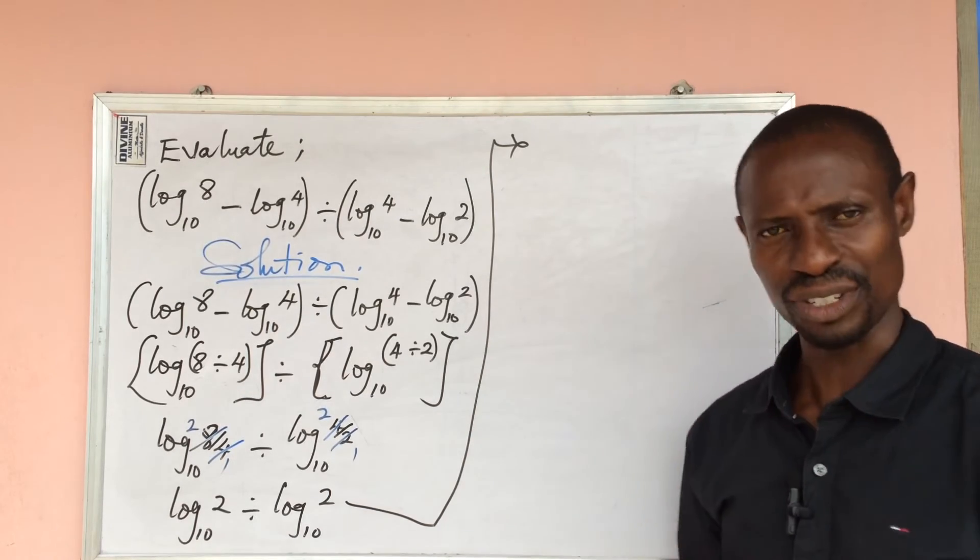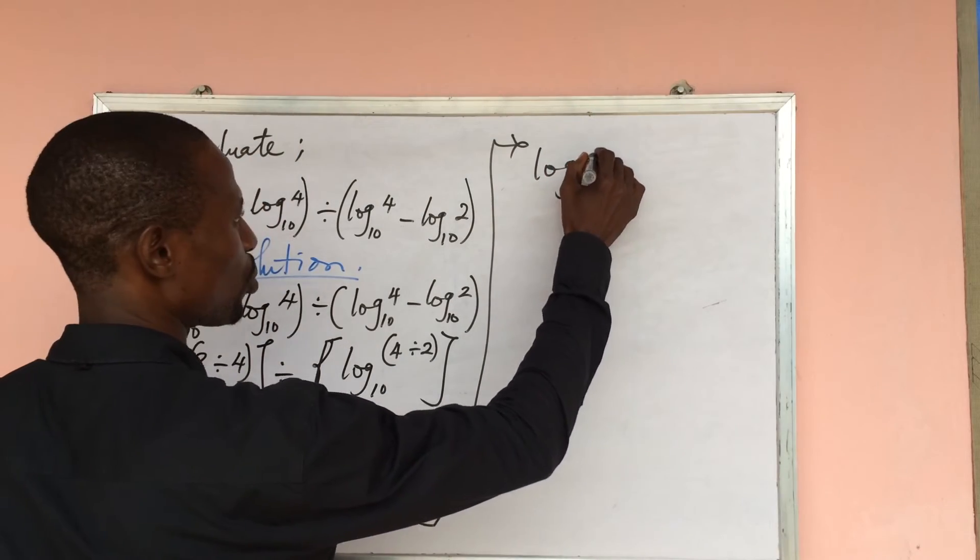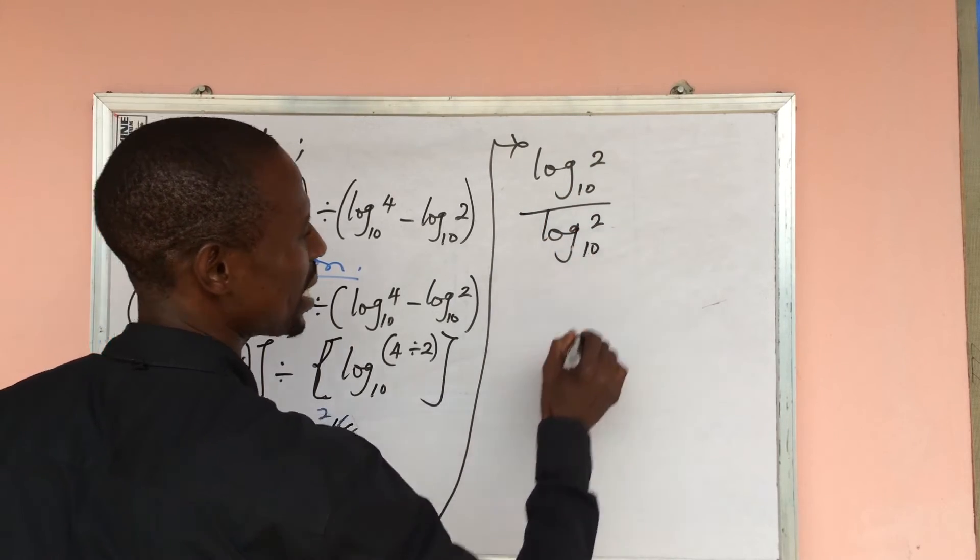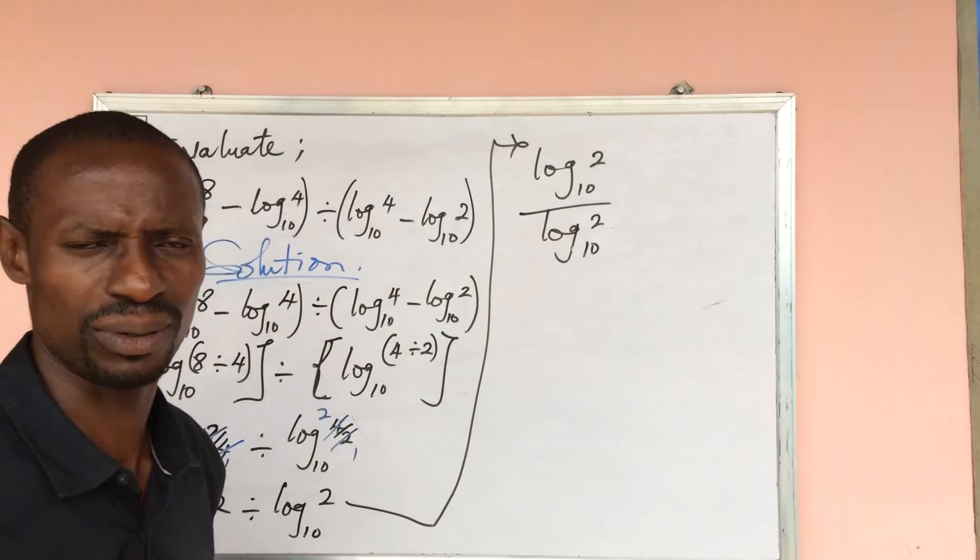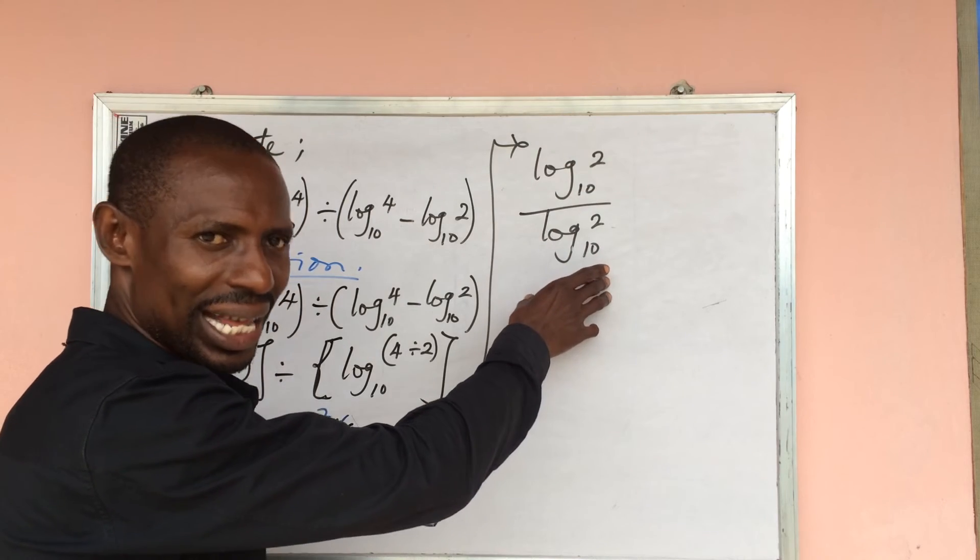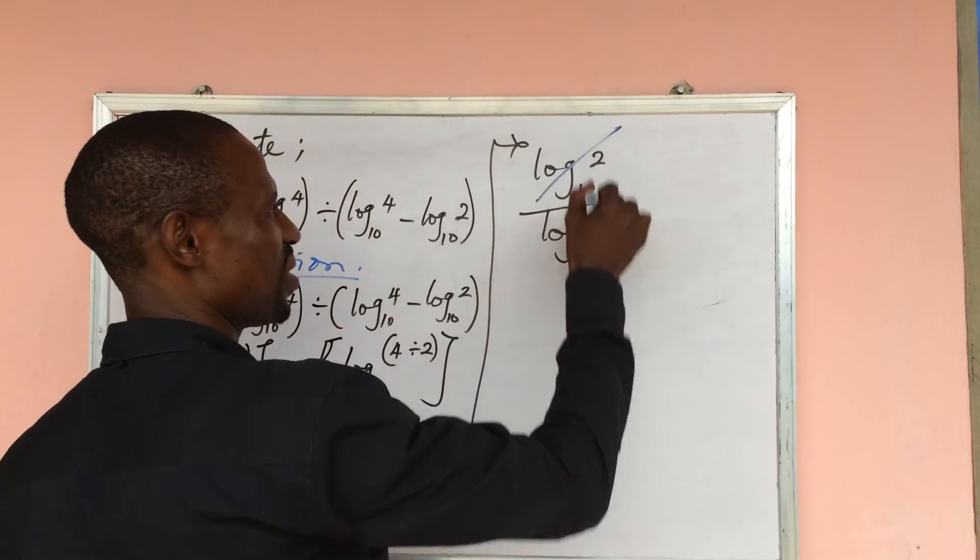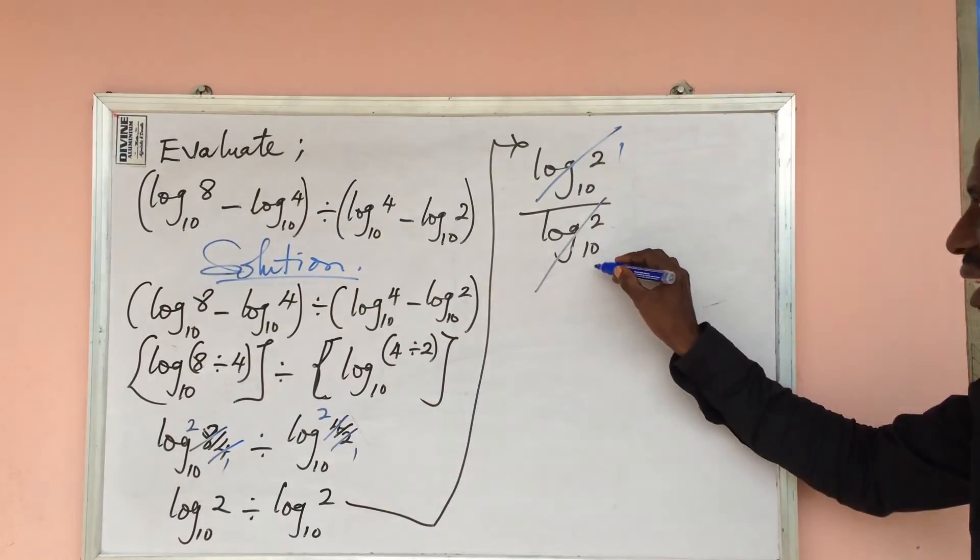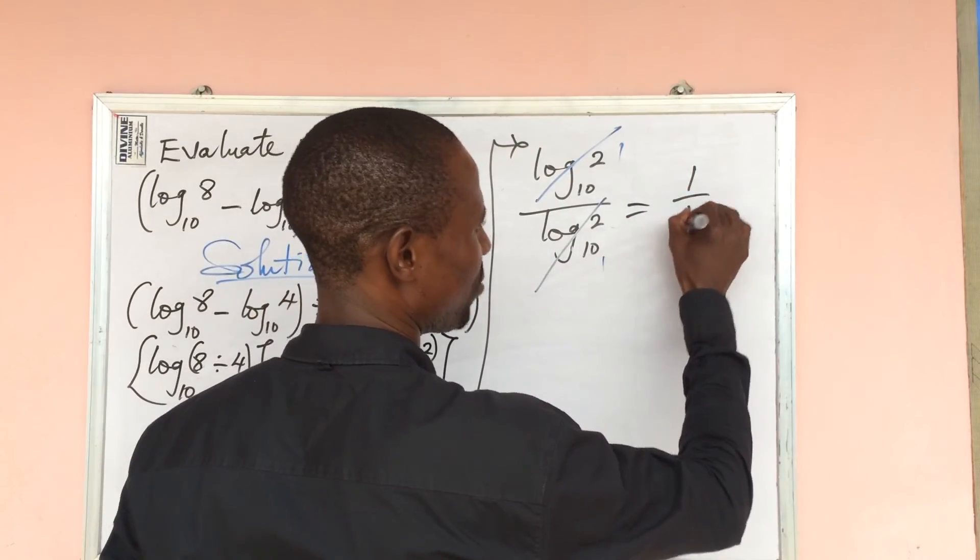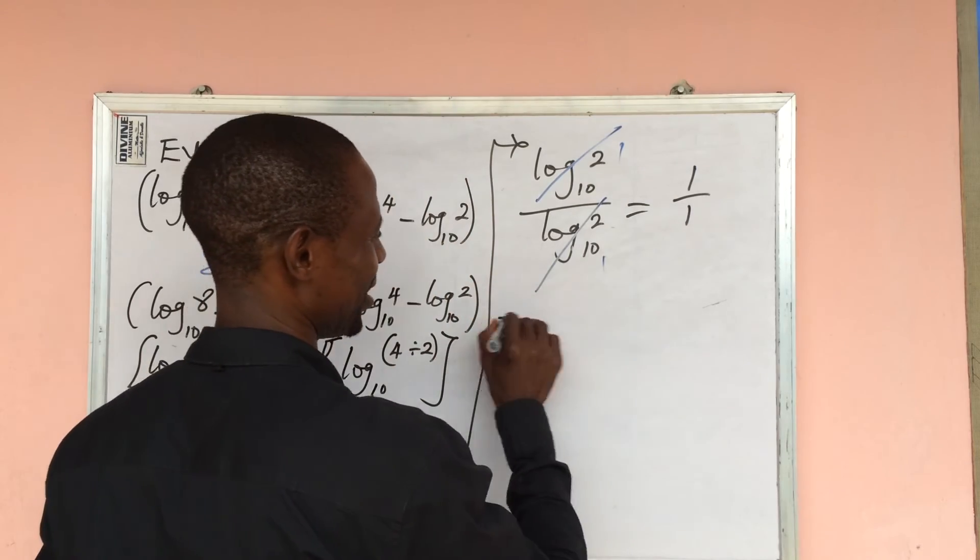Let's continue. This expression could be written as log 2 base 10 all over log 2 base 10. Now if you take a critical look at this, what we have on the numerator is the same as what we have at the denominator, so they can fully strike themselves out. Here we have 1, here we have 1. So we are going to have this equal to 1 over 1, and 1 over 1 is what? I know you know the answer is 1. So this is equal to 1.